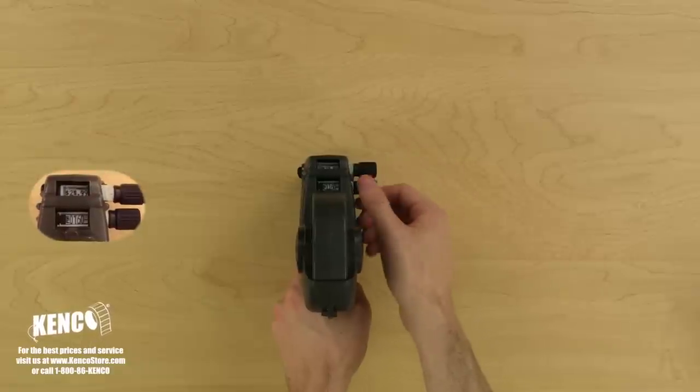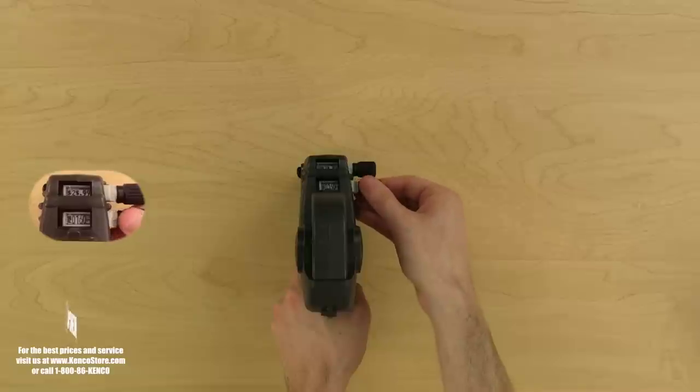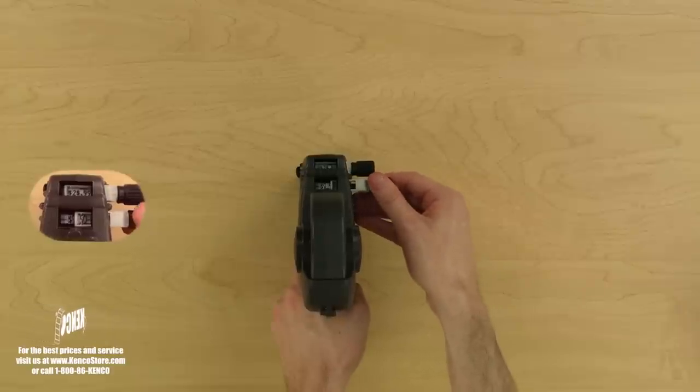When you have finished adjusting the top dial, let's make sure to push it back in and we'll move to the bottom adjustment dial. When you have finished adjusting the bottom dial, be sure to push the adjustment dial back into the print head and you're all set.